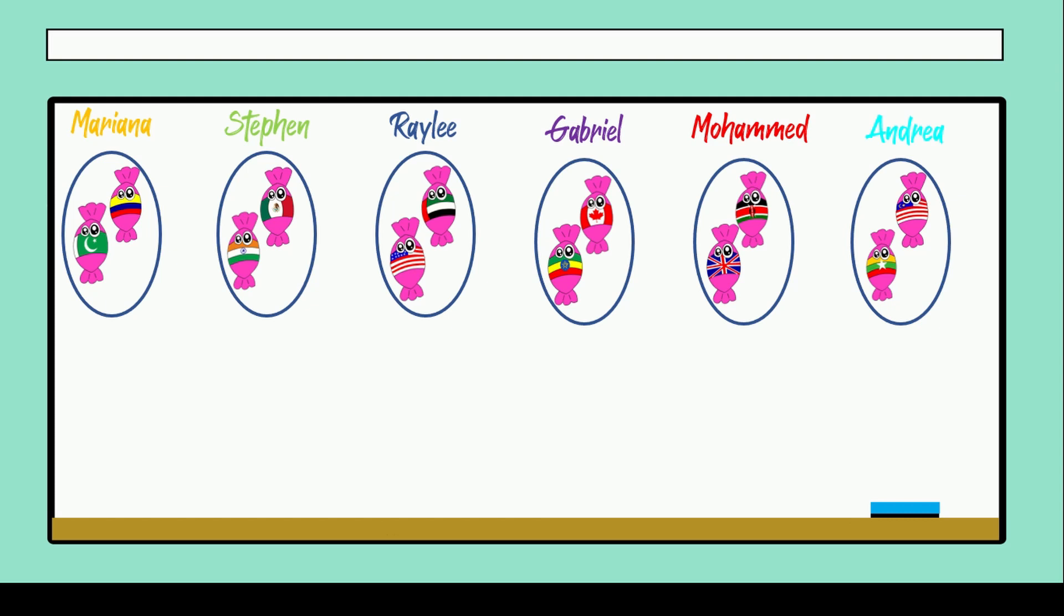We have to represent these groups with a division. So how many total candies do we have? Twelve. And we divide it by how many? The number of students. Six students. Very good. So twelve divided by six, that equals two.